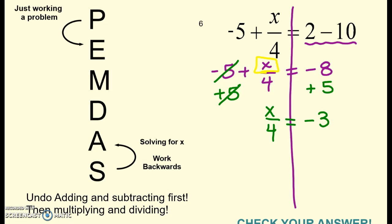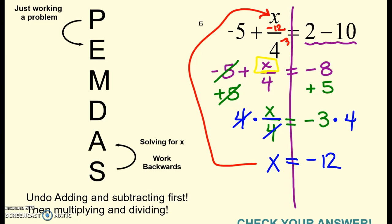Now I'm ready to undo this. I have division by 4. So the inverse of that would be to multiply by 4. So show it right off to the side like that. Multiply both sides by 4. Cross out what cancels. And x is equal to, well, negative 3 times 4, negative 12. Now I just have to check it, plug it back in and check it. So plug in negative 12 there. If I put negative 12 in, this whole thing would give me, negative 12 divided by 4 would give me negative 3. And negative 5 plus negative 3 does make what we said right here, negative 8. So I checked it and I know it's right.